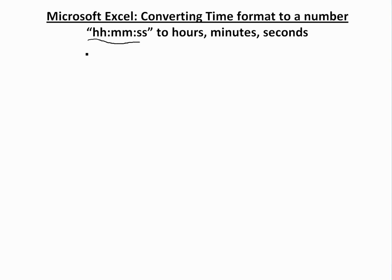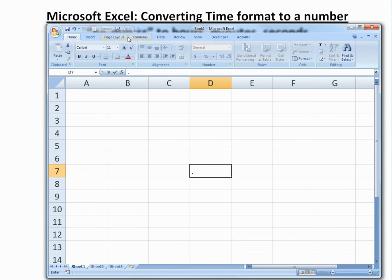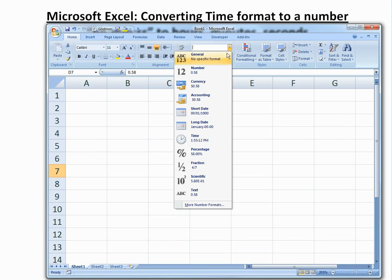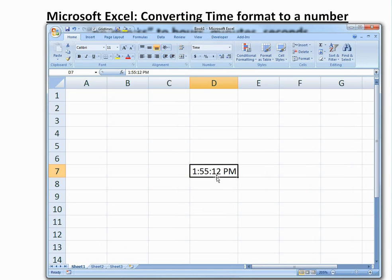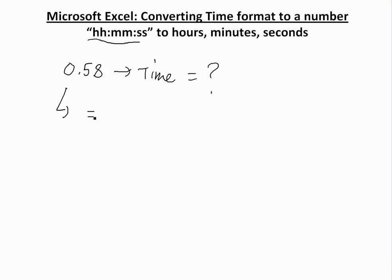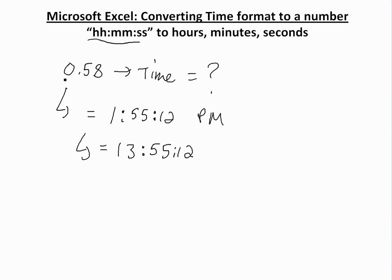Let's go the other way around first. If you have 0.58 and you convert this to a time format in Excel, what do you get? So if we put 0.58 — I'm using Office 2007 — and change the format to time, we get 1:55:12, which is 1:00 PM. So basically, 0.58 equals 13:55:12 on the 24-hour clock. That's pretty cool — just 0.58 can represent that time.